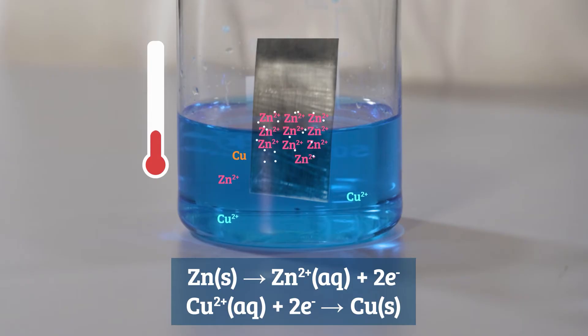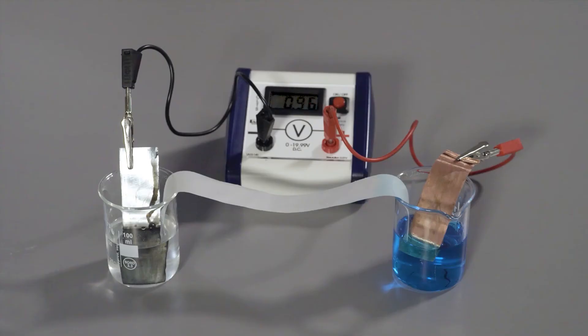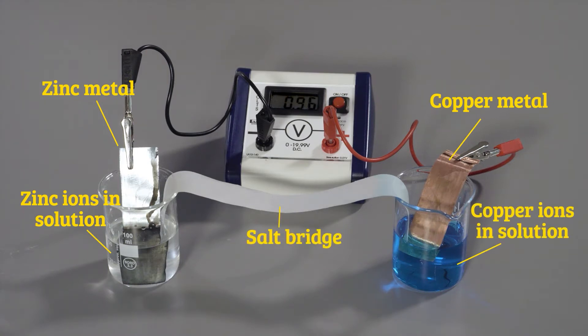If we force the electrons through an external circuit to get from the zinc metal to the copper ions, we can use the change in free energy to do work. In the electrochemical cell I'm about to set up here, we have zinc in zinc sulfate solution connected to copper in copper sulfate solution via a salt bridge.